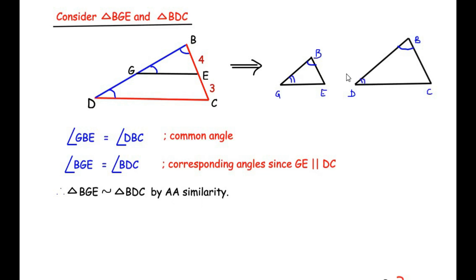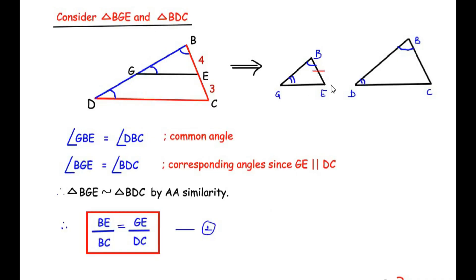Since the two triangles are similar, their corresponding sides are proportional. Side BE from triangle BGE is proportional to side BC from triangle BDC, and side GE is proportional to side DC. We use BE and BC because their values are known, and GE because it is part of EF — which we ultimately need for the proof. Let this be equation 2.